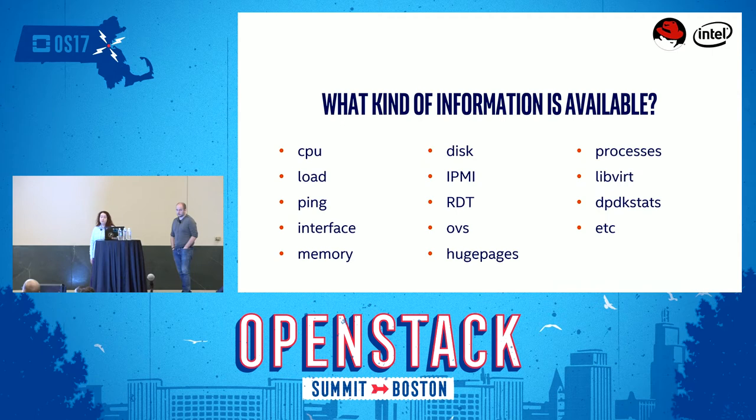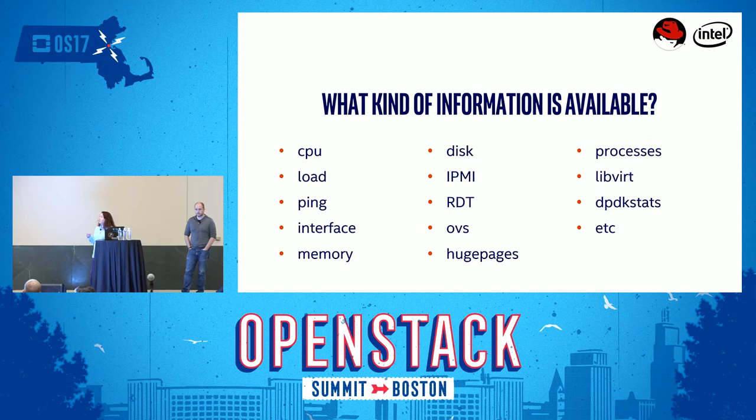What kind of information is available from CollectD? CollectD has over 90 plugins — these are just a selection. Each plugin can provide multiple metrics for multiple resources as well. For example, taking the CPU plugin, you get eight different metrics about your CPU utilization for each individual CPU, and it's similar across other plugins as well.